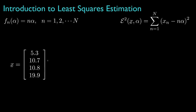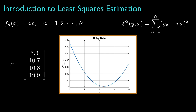Now let's suppose that the observation has the values 5.3, 10.7, 10.8, and 19.9. In this case, there's no immediately obvious value for alpha that would make a perfect fit to our observation function. And when we plot the squared error as a function of alpha for this observation, we see that it is minimized at a value of around 4.6. We'd say that alpha equals 4.6 is the least squares estimate for the parameter based on this particular observation. Even though we don't get a perfect fit, we can minimize the squared error.